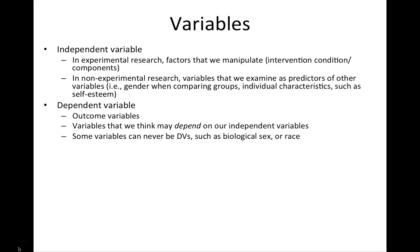Dependent variables are what we think of as our outcome variables. An easy way to remember this is that dependent variables are variables that we think may depend on some other variable — our independent variable. There are some variables that can never be dependent variables, like biological sex or race. We can never say that one's current level of self-esteem will predict whether or not they are biologically male or female, or whether they are white or Black. So there are some variables we just can't think of as dependent variables.